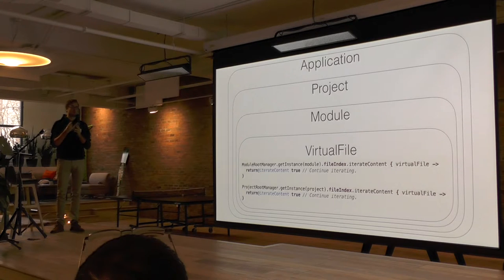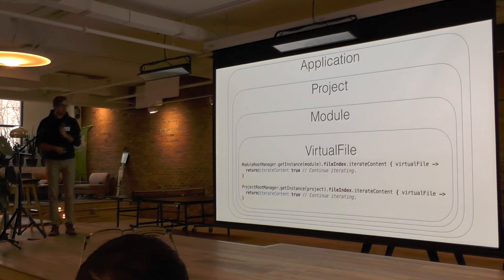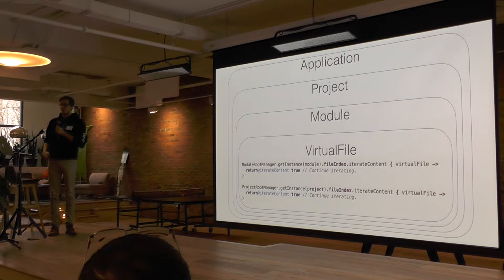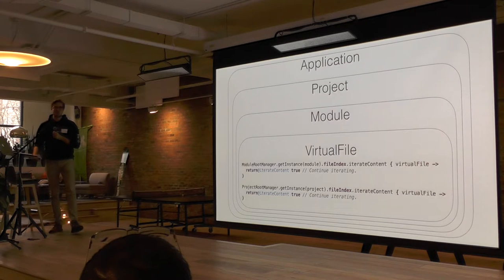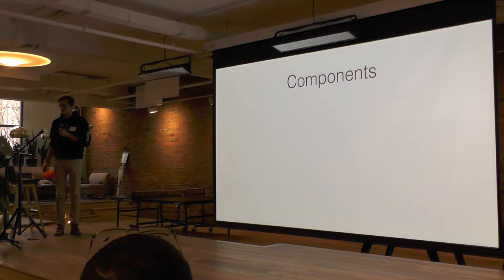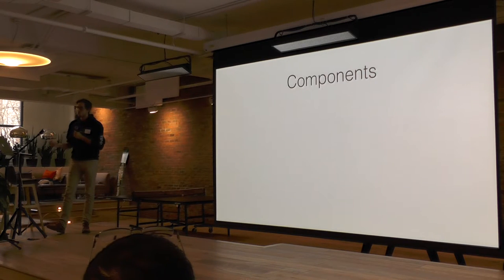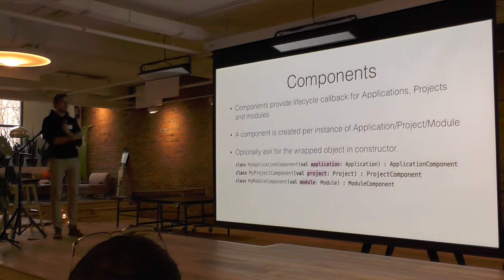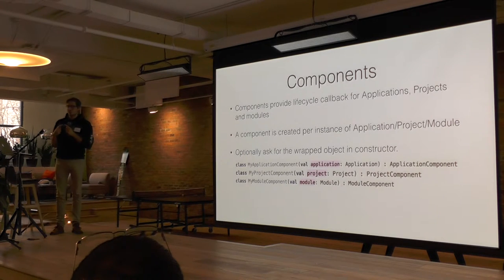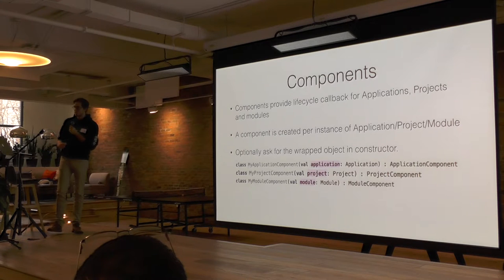So the architecture is: Application → Project → Module → VirtualFile → Document → PSI elements. That's the architecture behind IntelliJ plugins. Once you start writing a plugin, you need an access point into it. The first one is called a Component, and these map one-to-one with those stateful things: application components, project components, and module components. They give you lifecycle callbacks — when the application, project, or module has been opened or closed.